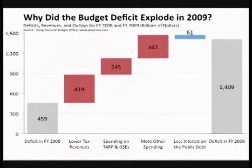During periods of low spending and low GDP, fiscal policy has had its problems as well. Increased government spending and reduced taxes has led to budget deficits. A budget deficit is when the amount the government spends in a year exceeds the amount of revenue it makes through taxation and other means.